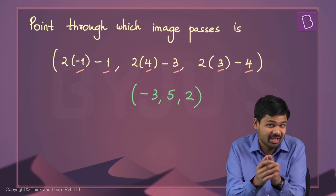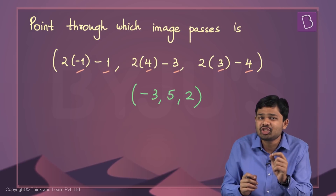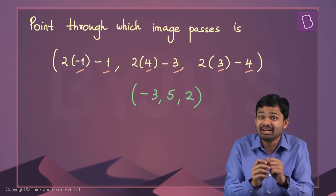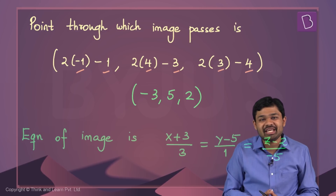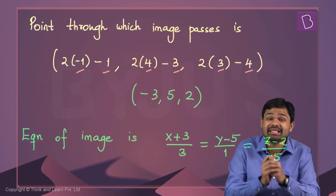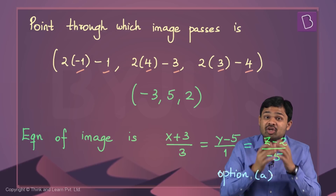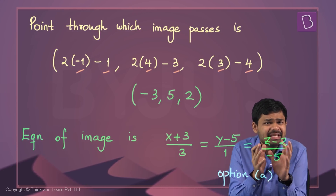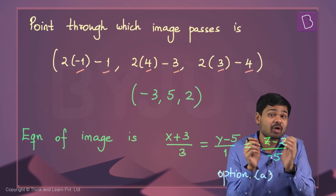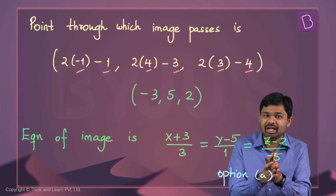Now we know a point (−3, 5, 2) through which the image line passes. Since the image line is parallel to the given line, the direction ratios are the same: 3, 1, minus 5. The equation of the image line is therefore x plus 3 by 3 equals y minus 5 by 1 equals z minus 2 by minus 5. This is option A, which is the correct answer. Every time you see an image problem in 3D, use this logic: the plane acts as a mirror, and the image is at an equal distance from the plane as the given line or point.